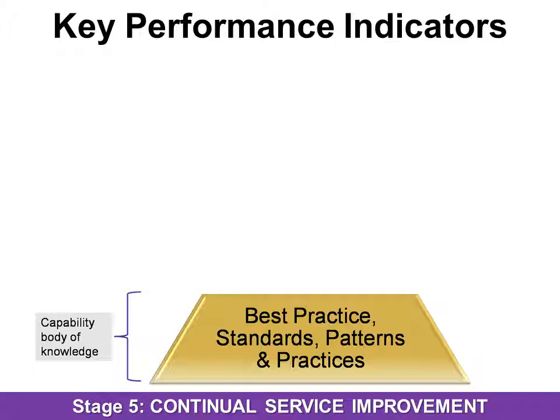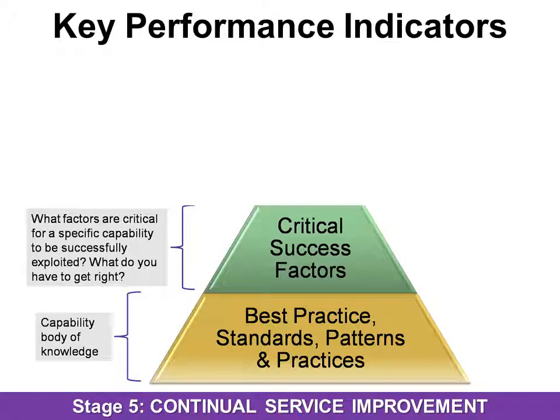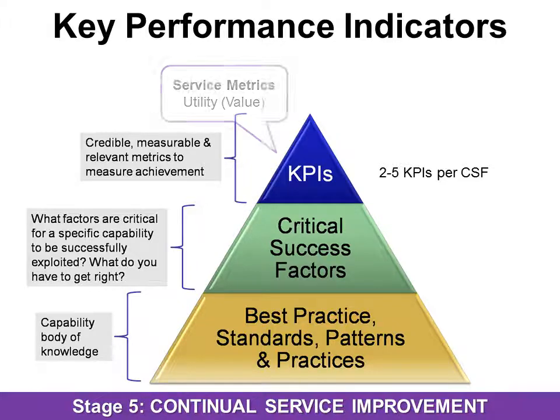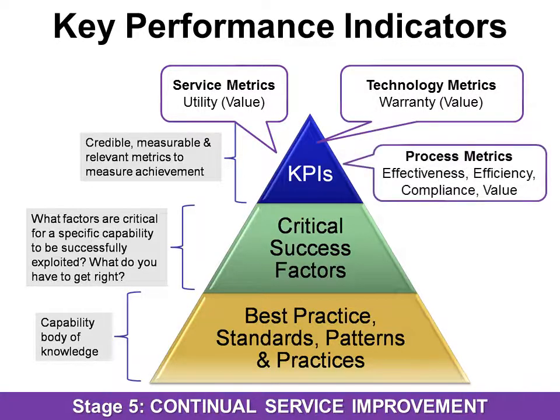How do we know what data to gather? Our ITIL framework has 26 processes. We look at those processes and within that we look at our critical success factors (CSFs) — the things you have to get right. You want two to five CSFs per process. Then we have KPIs, or key performance indicators — two to five KPIs per CSF. These are credible, measurable, and relevant metrics to measure achievement. You would measure your service metrics, technology metrics, and process metrics.